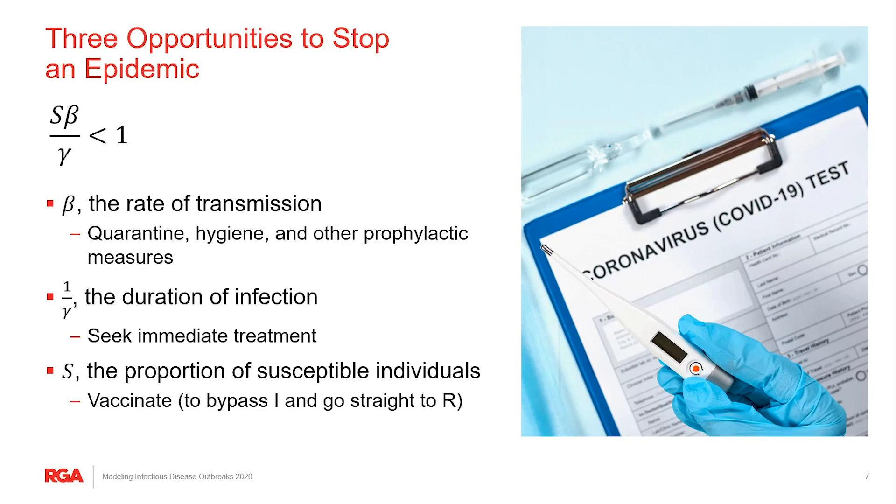Gamma then is really just the inverse of the duration of the infection. So doing things like seeking immediate medical treatment, it might be possible to shorten the length of an infection and thereby helping to move more quickly from that infectious state to the removed state and more quickly end an epidemic.